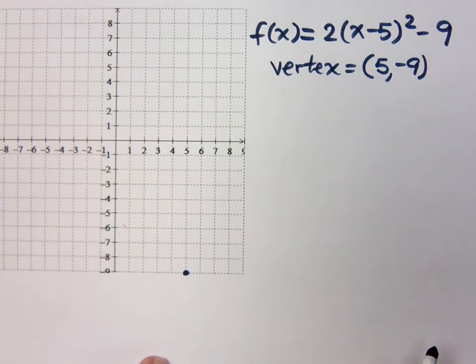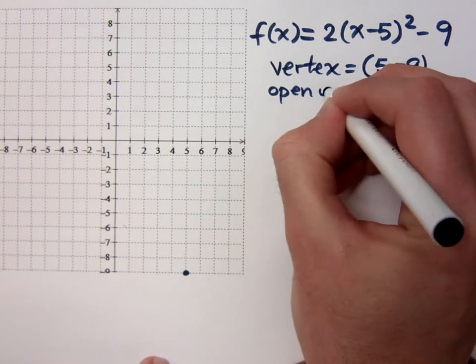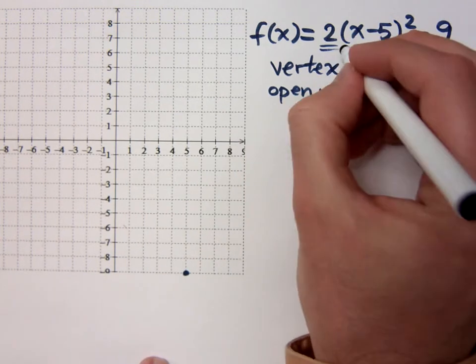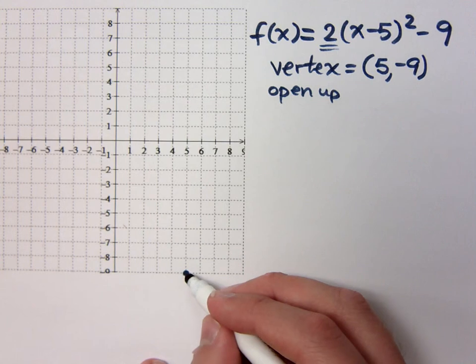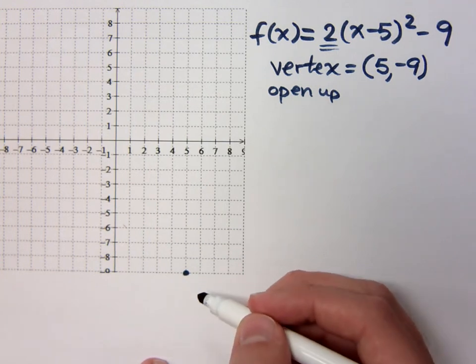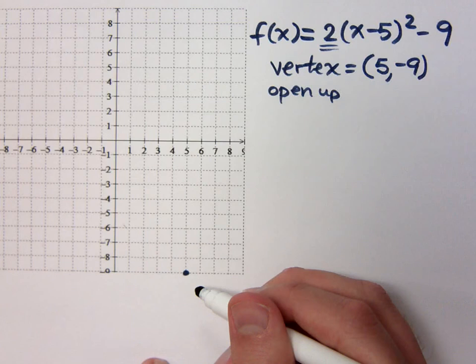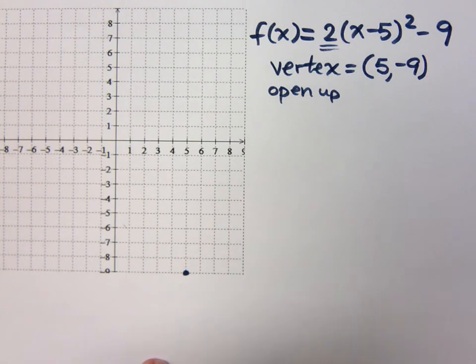Does it open up or down? What tells you it opens up? You've got a positive coefficient here. Of course, if this is your vertex and you open down, I didn't really do a good job of giving you an appropriate graph, right?